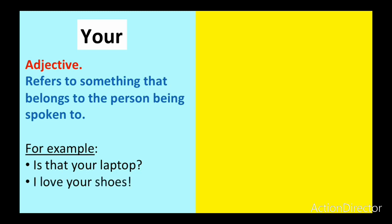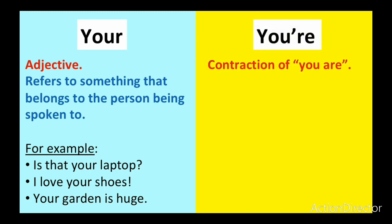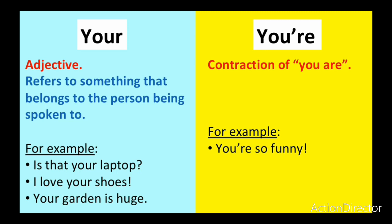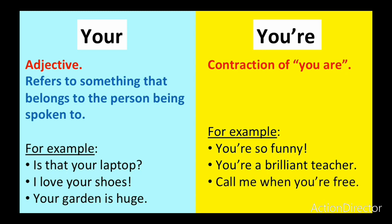Another example is: I love your shoes. Your garden is huge. You're is a contraction of you are. For example, you're so funny. The sentence would still make sense if we said you are so funny; however, we've shortened the words you are to you're. Another example is: You're a brilliant teacher. Call me when you're free.